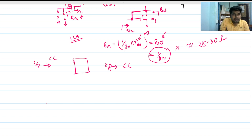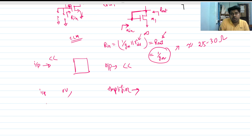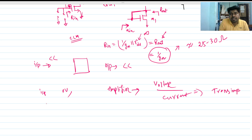Here the input is current and the output is voltage, so this is a transimpedance amplifier — because output is voltage and input is current.